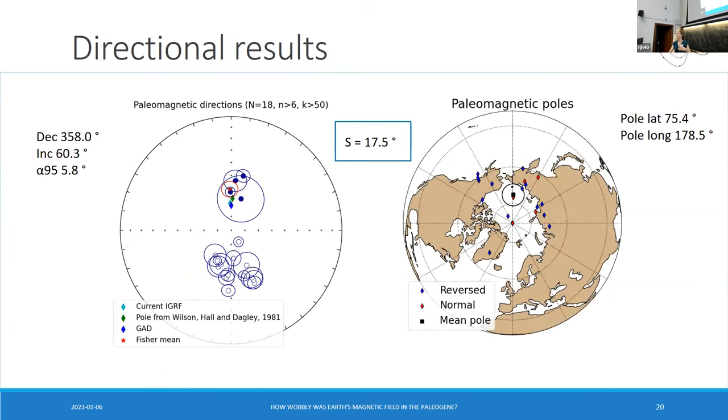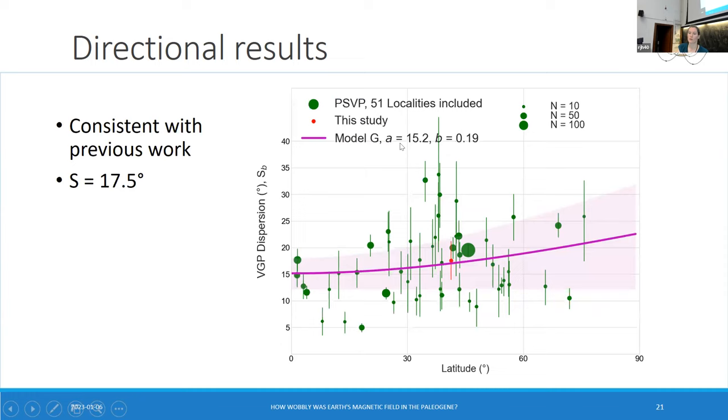And these are the results. So mostly reversed, which was to be expected from the previous work that had been done, plus a few normal ones. So you've got my pole on there, and comparing that with GAD and the current IGRF, it's not actually all that different. And the pole that was got from Wilson, Hall and Dagley's previous work. So they all agree quite well. But we've got another estimate for this PSV scatter. So we can add that in with the previous results that we were showing earlier from the Nordic conference. And it plots right on the line with everything else, which is satisfying. It hasn't changed our estimates for Model G-A and Model G-B. But at least it's another data point helping constrain it and bring down the noise.